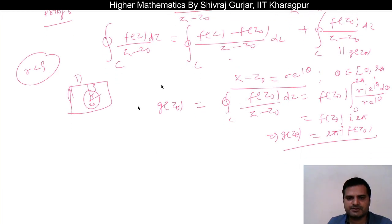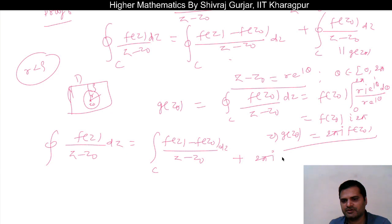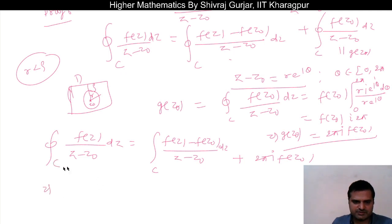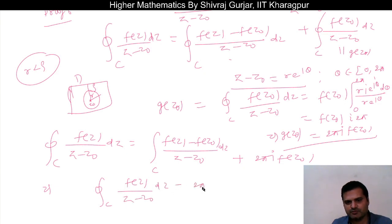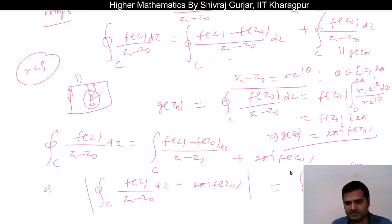Now we are going to do this: the integral of f(z)/(z minus z₀) dz equals the integral along C of [f(z) minus f(z₀)]/(z minus z₀) dz plus 2πi·f(z₀). Rearranging: [integral of f(z)/(z minus z₀) dz] minus 2πi·f(z₀) equals the integral along C of [f(z) minus f(z₀)]/(z minus z₀) dz. Now if we take the modulus, then we can bound this expression.